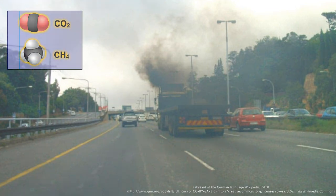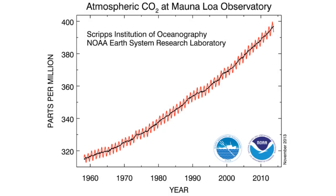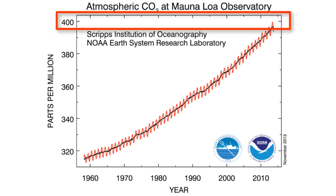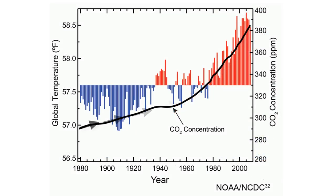This graph shows the progressive increase in carbon dioxide concentrations over the past five decades. The concentration of carbon dioxide in the atmosphere is now over 400 parts per million, which represents a greater than 20% increase since the 1960s. This increase in carbon dioxide concentrations, as well as other greenhouse gases such as methane, is directly related to an observed increase in global temperatures.